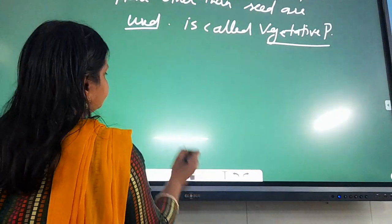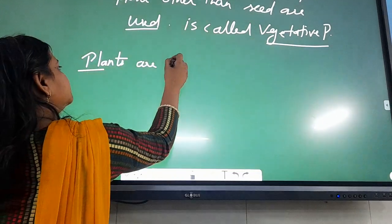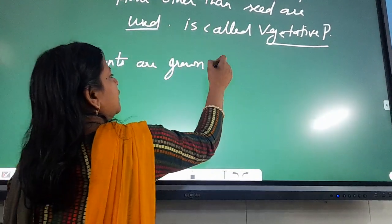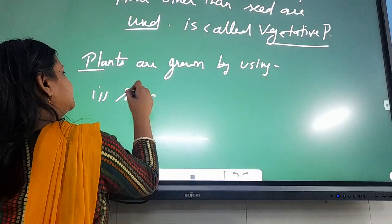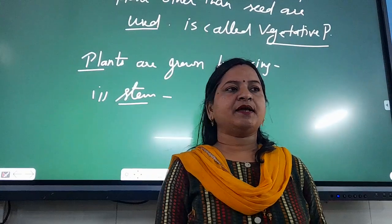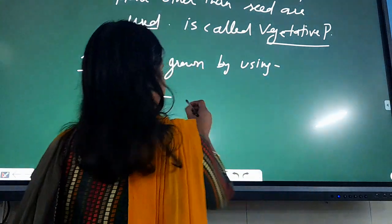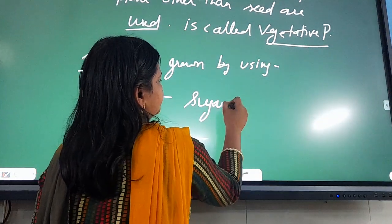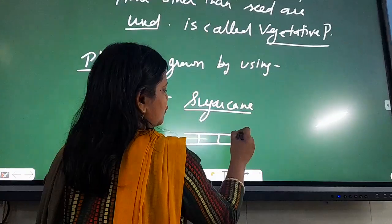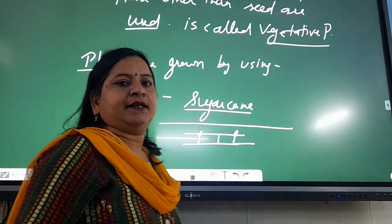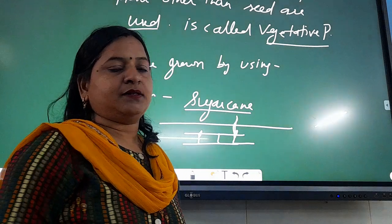Here are some examples where plants are grown by using the stem. There are a number of plants that don't have seeds and we usually grow them with the help of the stem. For example, you can see sugarcane. In sugarcane, the stem portion that has nodes also has some bud-like structures. They are buried in the ground and these buds develop into new plants.